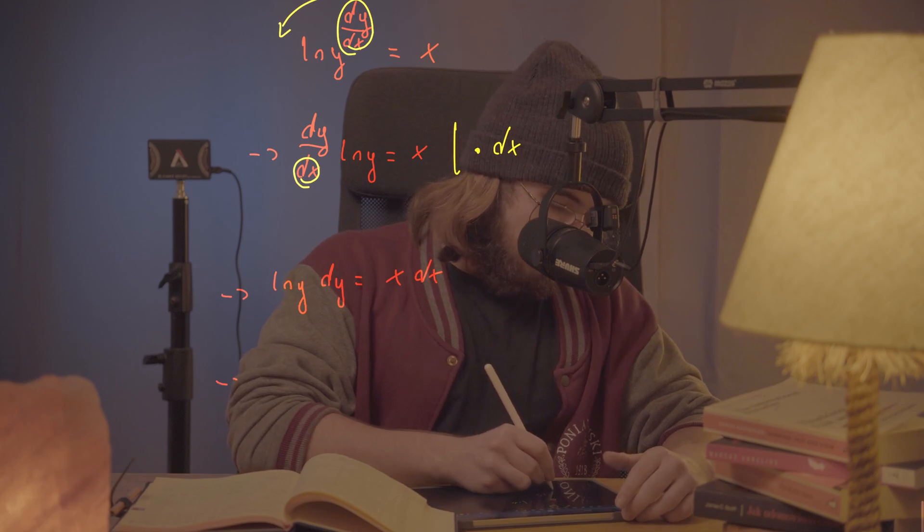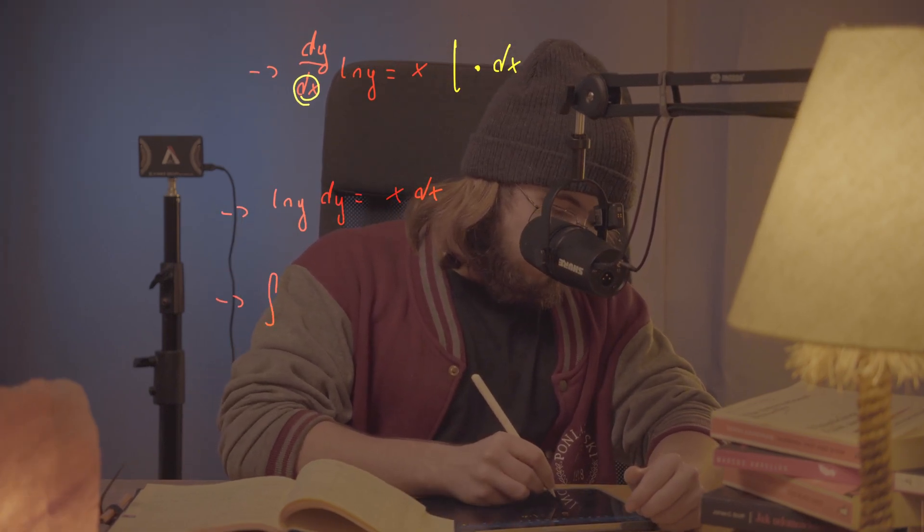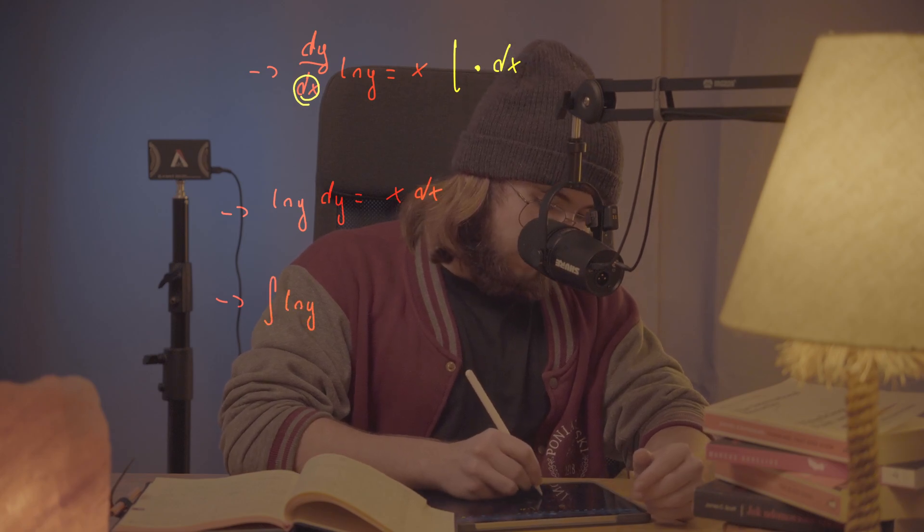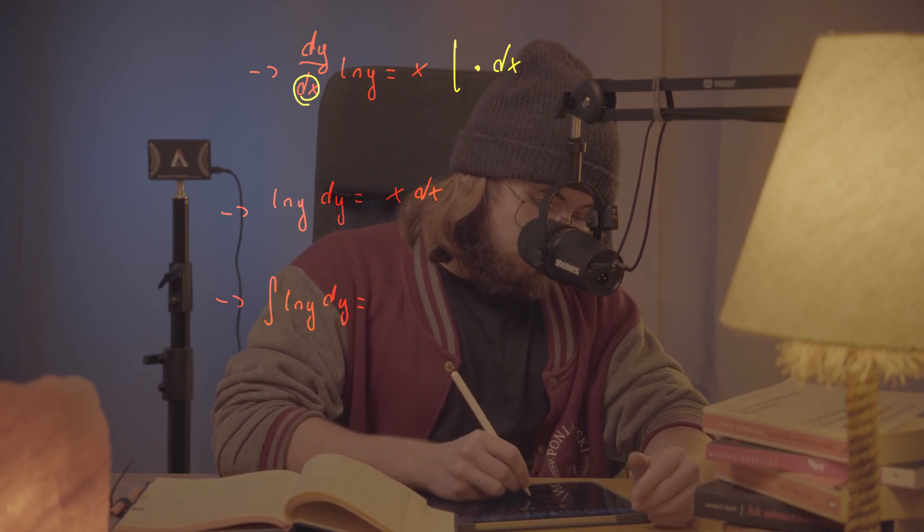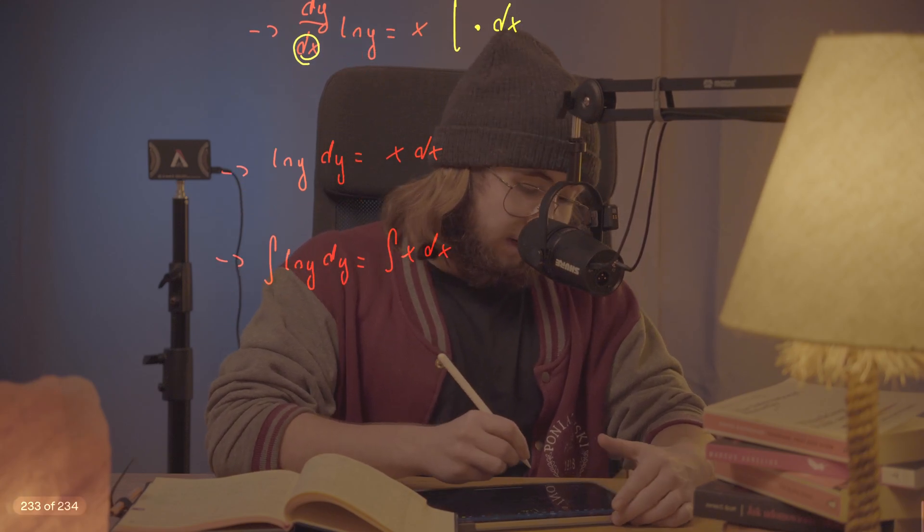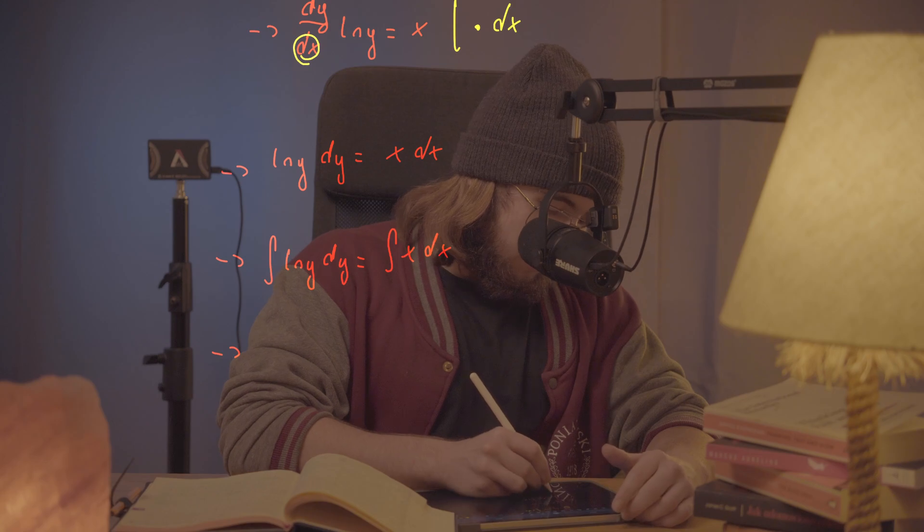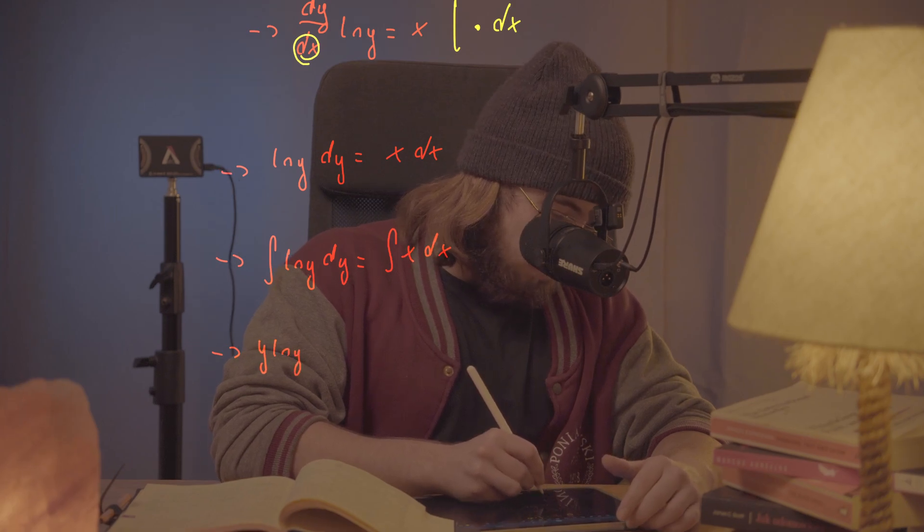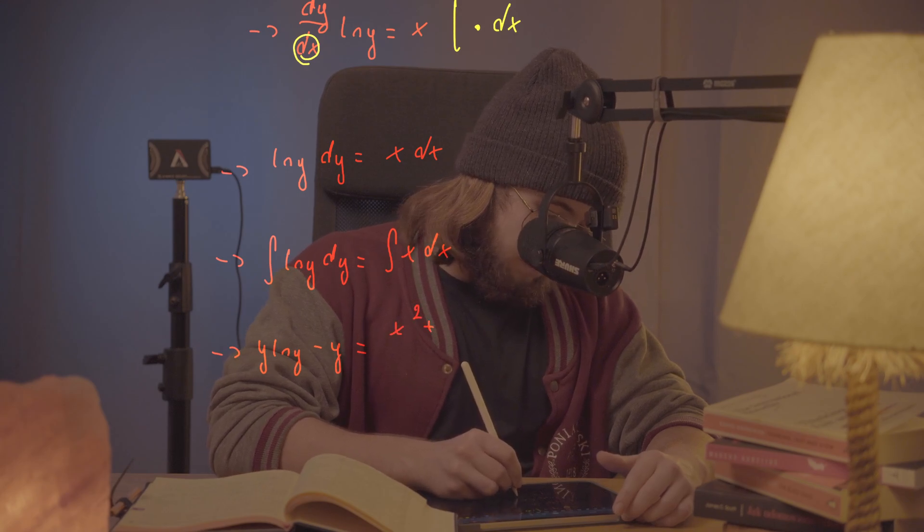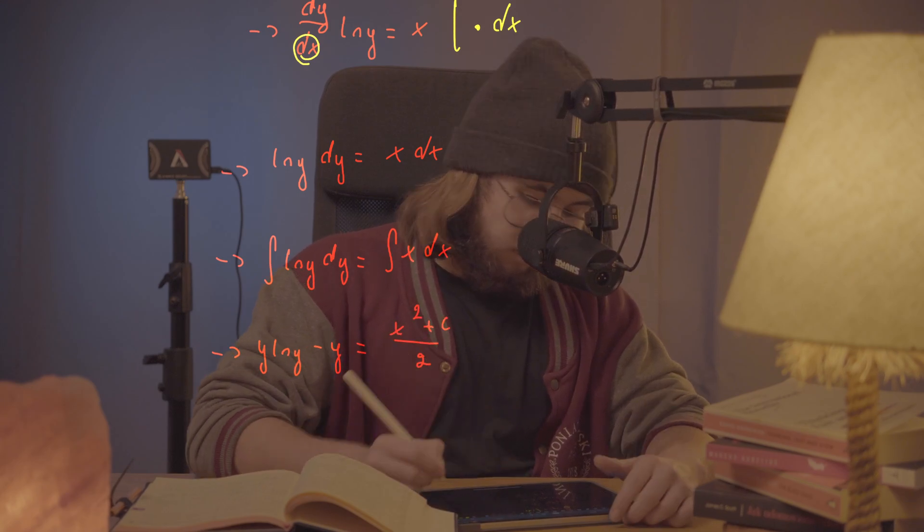Now I can just integrate both sides with respect to the differential that is right there, which is natural log of y times dy equal to the integral of x times dx. And what I get then is y times the natural log of y minus y equal to x squared plus some constant, and that's gonna be all by 2.